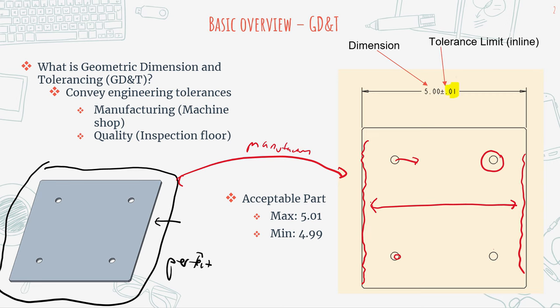A tolerance accompanies a dimension typically, and it tells the person reading it to what extent we can allow deviation. In this case, we're saying that as long as the width of the plate is between 4.99 and 5.01, this part is an acceptable part. So even with all the surface roughness, if the part width is 5.001, then this part is within tolerance and we can accept it for use.